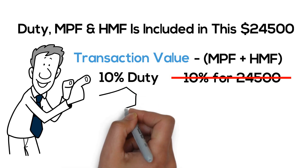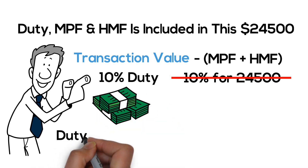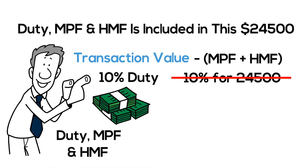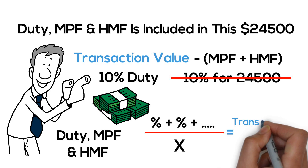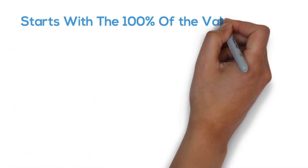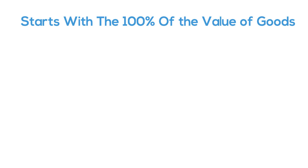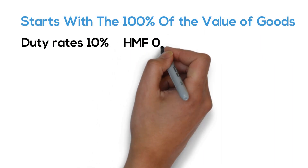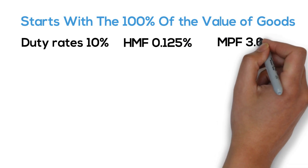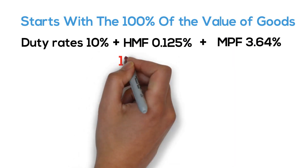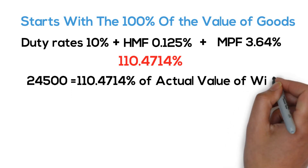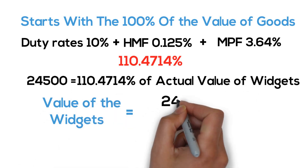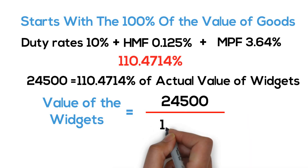Now the duty rate is 10%, but you can't just multiply 10% times $24,500 because you'd be calculating that 10% off of a value that already includes the duty, harbor maintenance fee, and MPF in it. So the way you do it is you add up all your percentages and then divide to remove those and get down to the actual transaction value. You start with 100% for the value of goods, then add the duty rate of 10%, harbor maintenance fee of 0.125%, and MPF of 3.64%. That totals 110.4714%. So you divide $24,500 by 1.104714.